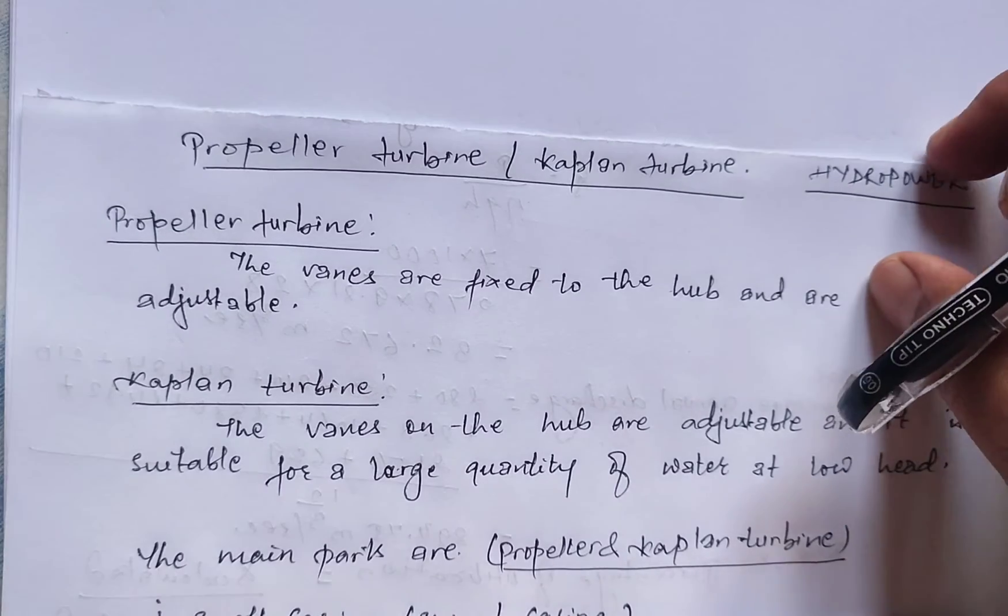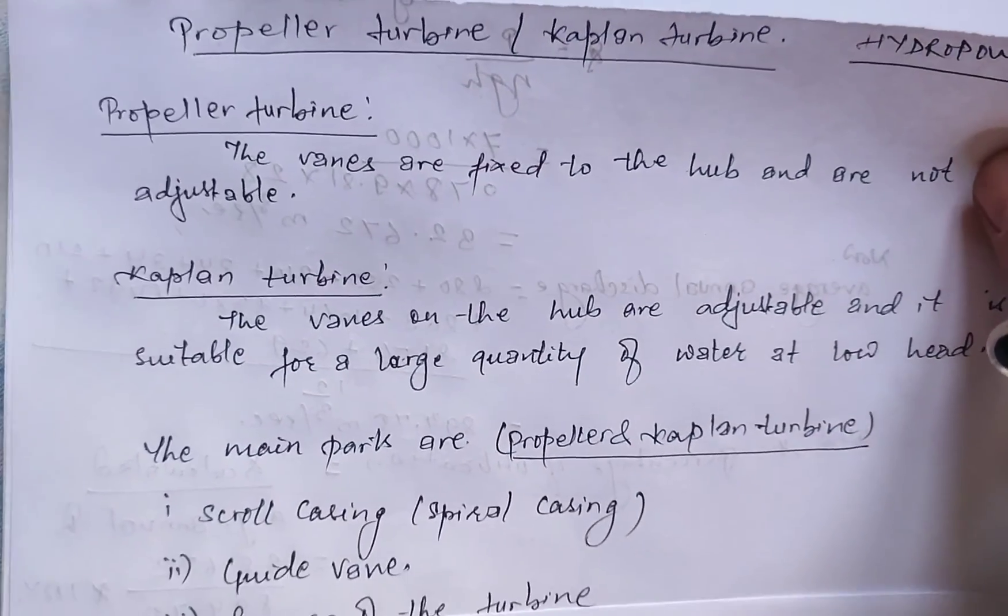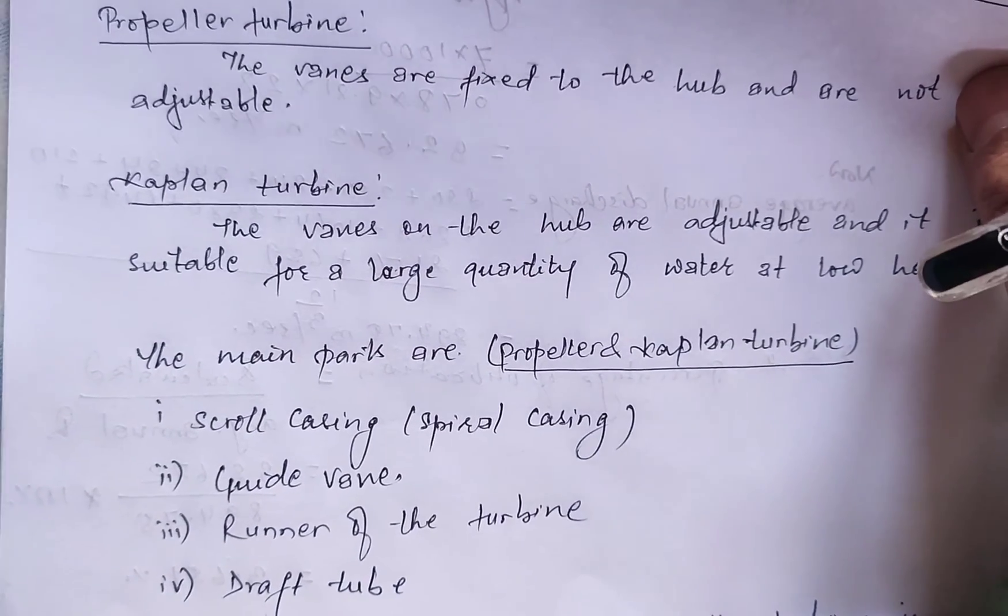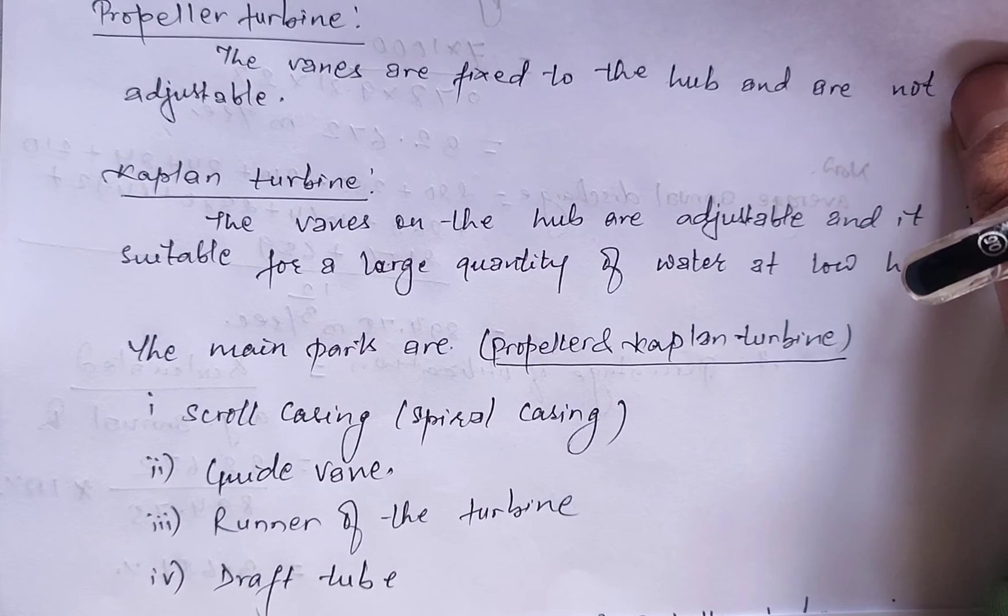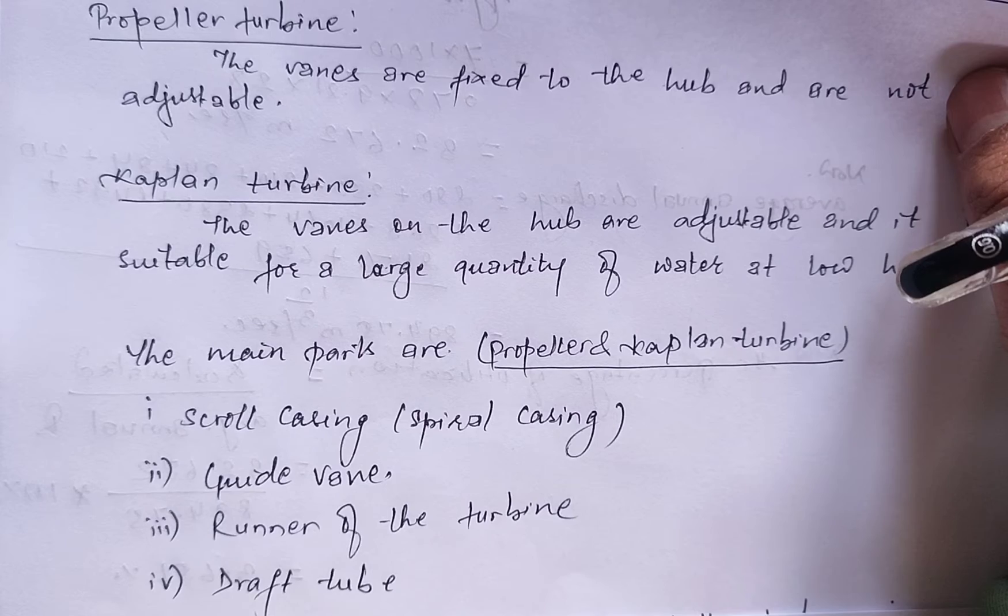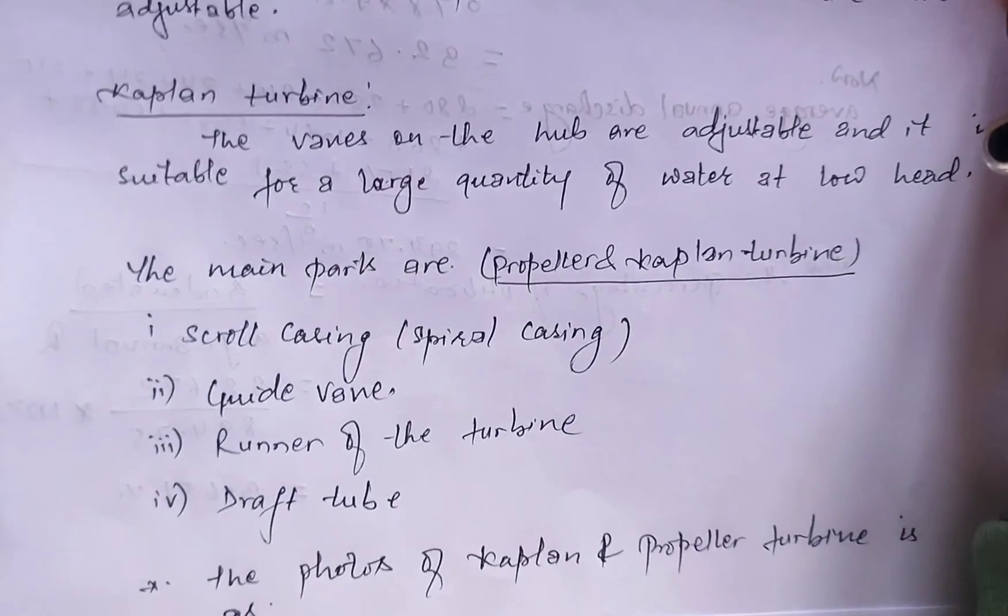The main parts of the Kaplan and propeller turbines are spiral casing or scroll casing, guide vane, runner of the turbine, and the draft tube. These are the main body parts of both the turbines, propeller as well as Kaplan turbine.